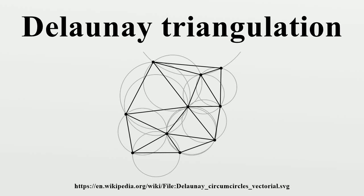In mathematics and computational geometry, a Delaunay triangulation for a set P of points in a plane is a triangulation DT such that no point in P is inside the circumcircle of any triangle in DT. Delaunay triangulations maximize the minimum angle of all the angles of the triangles in the triangulation — they tend to avoid skinny triangles. The triangulation is named after Boris Delaunay for his work on this topic from 1934.